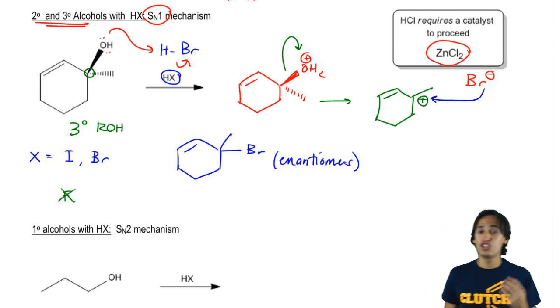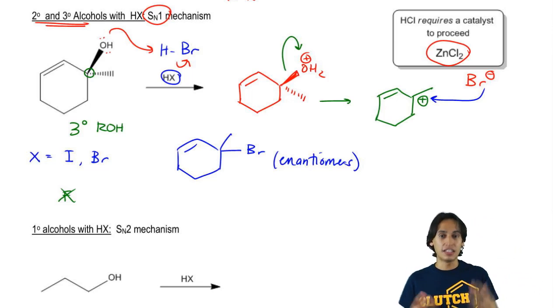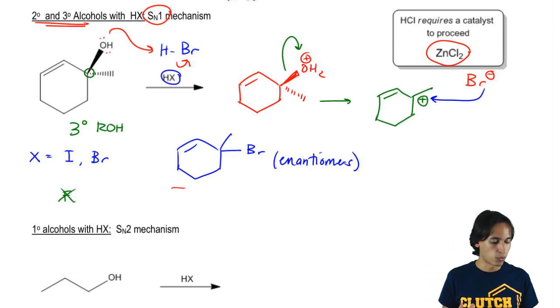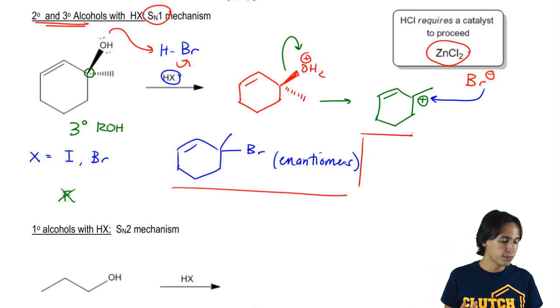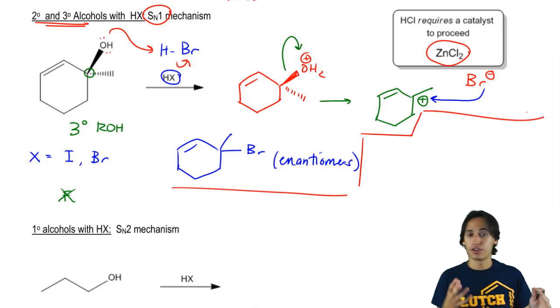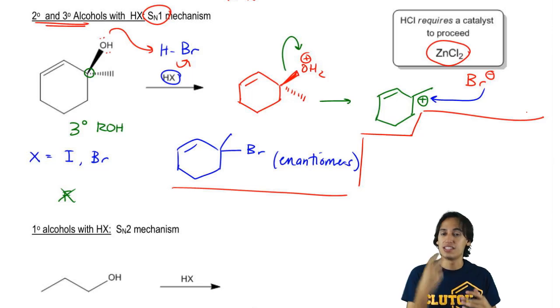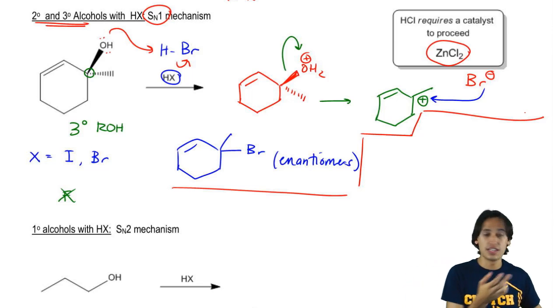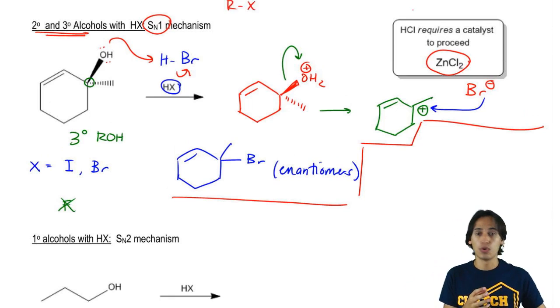And what that's going to do is it's actually going to make the leaving group stronger. So let me just show you really quick how that works. By the way, this together, having HCl and the zinc complex together is going to be called the Lucas reagent.